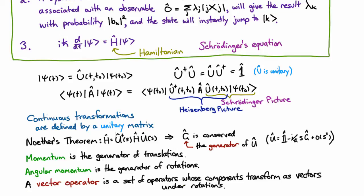There's this idea of a vector operator. This usage of the word vector is different from the usage we've been using for state vectors. This is the older-fashioned version of vector, where we're talking about vectors in three space. A vector operator is a set of three operators whose components transform just like vectors do.